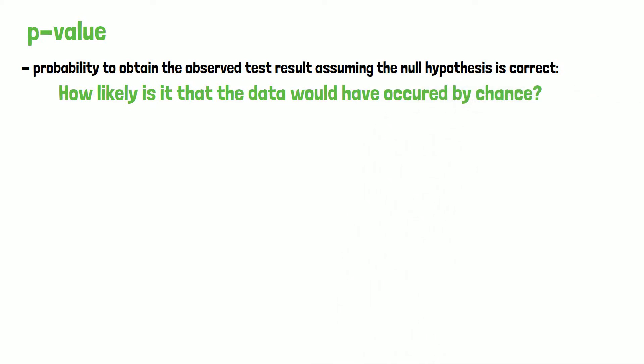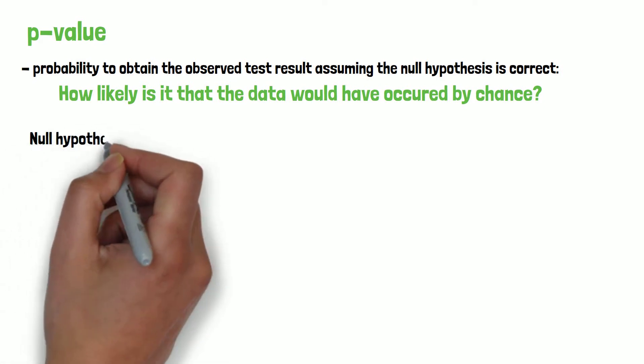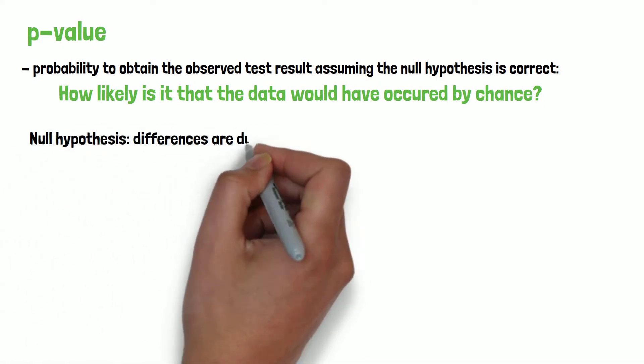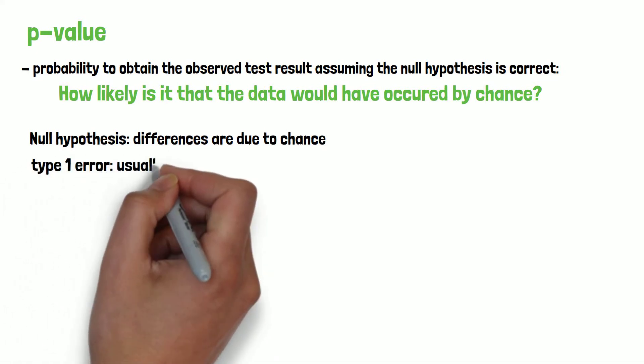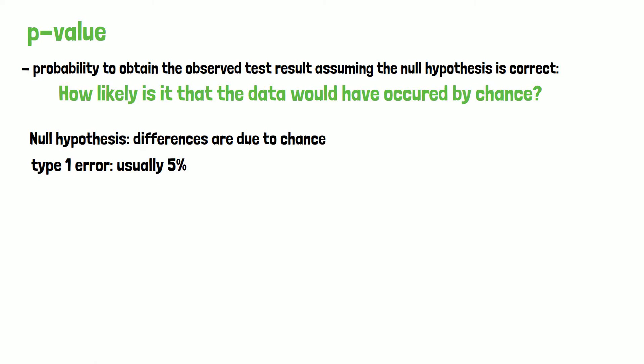The null hypothesis frequently states that there are no differences between groups and that the differences or relationships found are plainly due to chance. In clinical studies usually an acceptable type 1 error of 5% is set as a threshold for the test decision. We discussed statistical errors in a previous video.